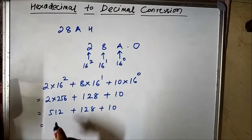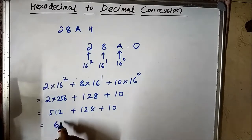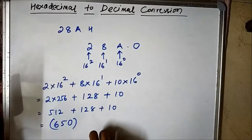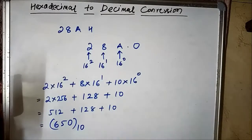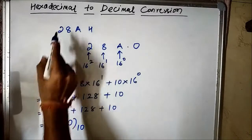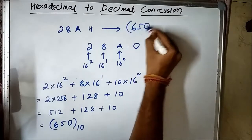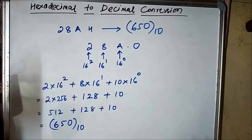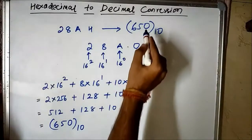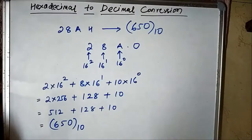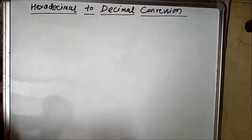That equals 650, so the decimal form of 28Ah is 650. This is the decimal representation of the hexadecimal number 28A.